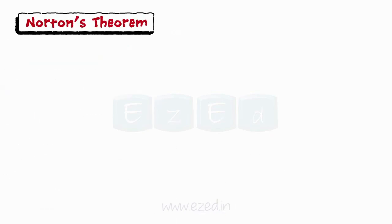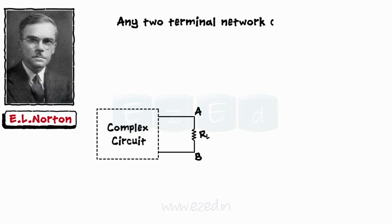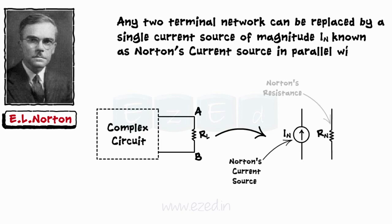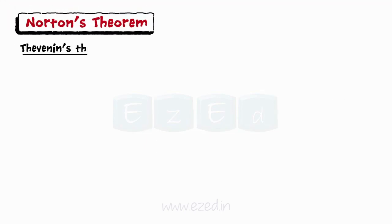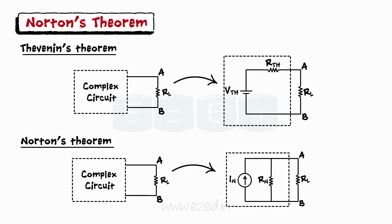The next theorem, developed by E.L. Norton, is called Norton's Theorem. It states that any two-terminal network can be replaced by a single current source IN, known as Norton's current source, in parallel with a single resistance known as Norton's resistance Rn. In Thevenin's Theorem we used Vth and Rth in series with the load, whereas in Norton's Theorem we connect IN and Rn in parallel with the load.